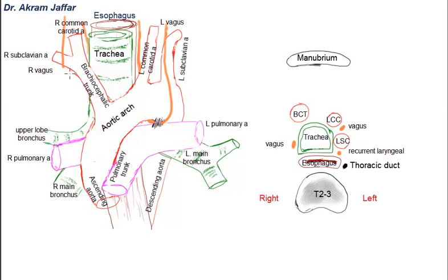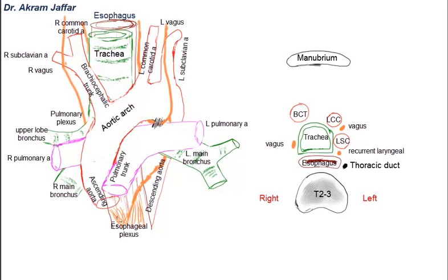Let's continue the journey of the right and left vagus nerves. The right vagus nerve goes behind the hilum of the lung and forms the pulmonary plexus, as does the left vagus nerve at the hilum. Both vagi then form the esophageal plexus in front of the esophagus. So the vagus nerve participates in both the pulmonary plexus at the hilum and the esophageal plexus. Both vagi pass behind the hilum of the lung. After the left vagus gives the left recurrent laryngeal nerve around the ligamentum arteriosum, it continues behind the root of the lung.